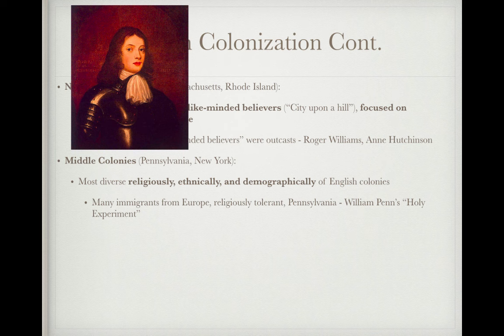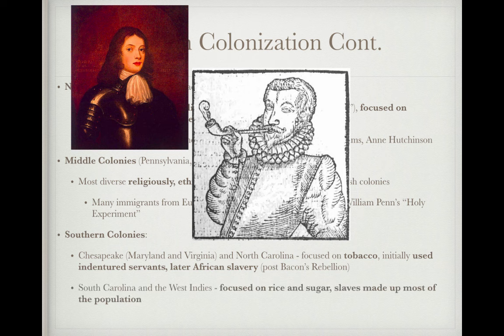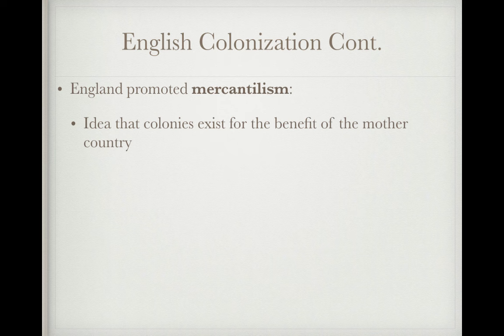Many immigrants from Europe, including present-day Germany, came to the middle colonies, which were religiously tolerant. Pennsylvania was founded by William Penn as a 'holy experiment' in religious tolerance. The southern colonies — Maryland, Virginia, and North Carolina — focused on tobacco and initially used indentured servants, then shifted to African slavery after Bacon's Rebellion. South Carolina and the West Indies focused on rice and sugar cultivation, where slaves made up most of the population. The colonies had representative assemblies — New England had town hall meetings, Virginia had the Virginia House of Burgesses.